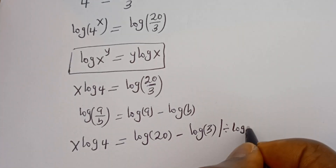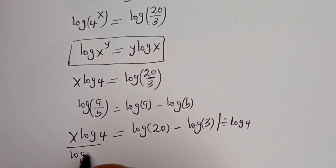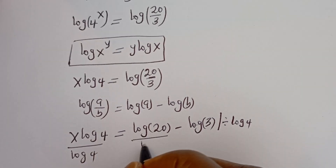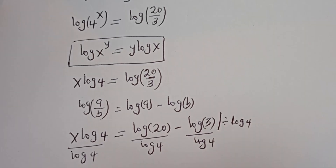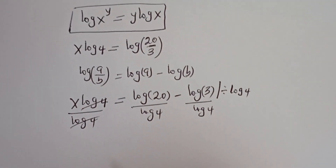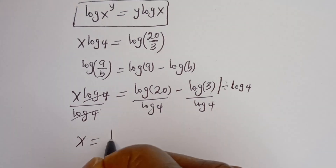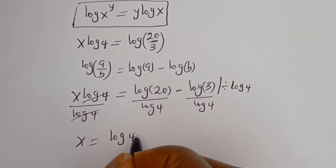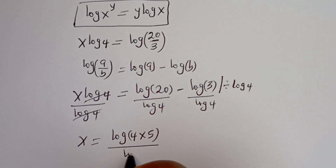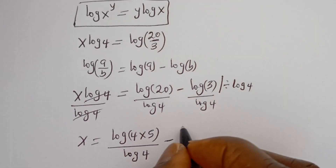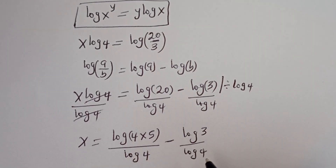So this divided by log 4, this divided by log 4, and this divided by log 4. Log 4 cancels, so s is equal to log 20 — which can be written as log of 4 multiplied by 5 — divided by log 4, minus log 3 divided by log 4.